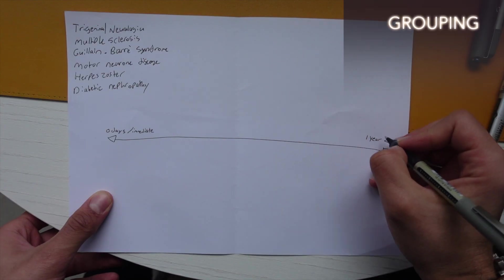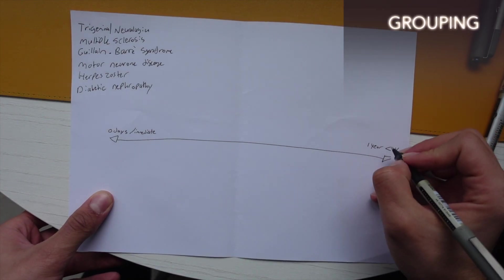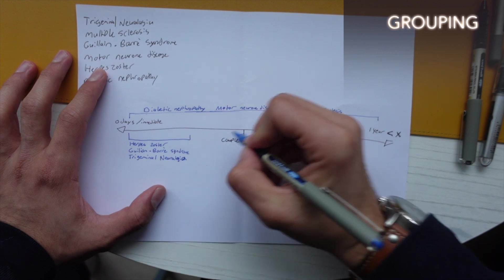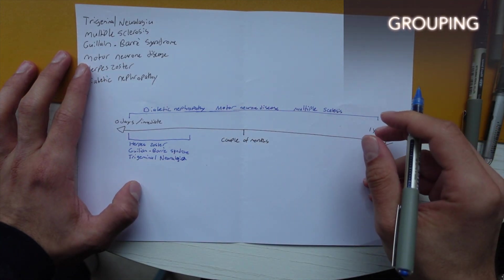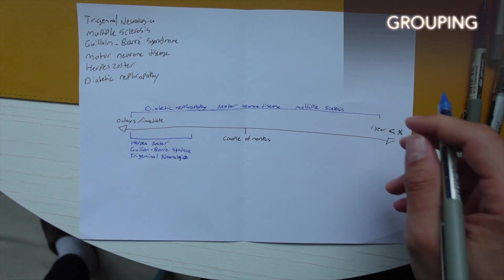Let's focus on finding commonalities between these six conditions. Interestingly, in neurology, time can serve as a distinguishing factor between these conditions. Creating a timeline or scale to place these diseases allows you to start to differentiate between all six of them together.